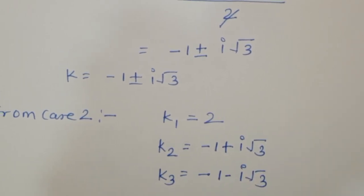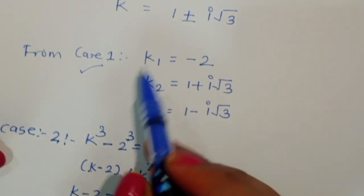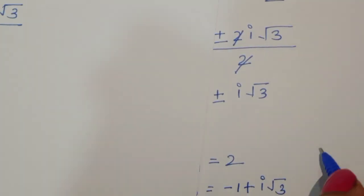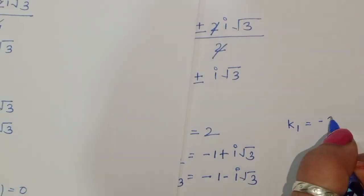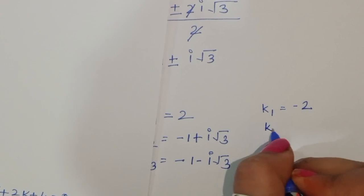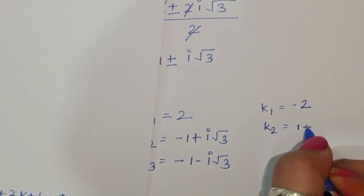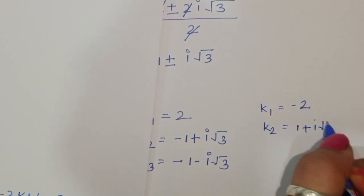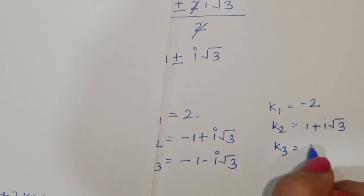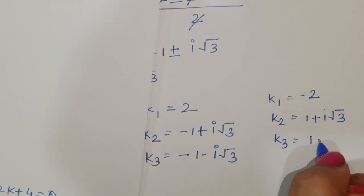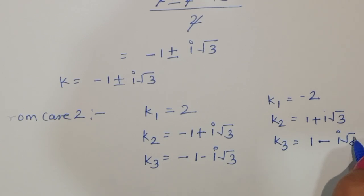In summary, from Case 1: k₁ = -2, k₂ = 1 + i√3, k₃ = 1 - i√3. And from Case 2: k₄ = 2, k₅ = -1 + i√3, k₆ = -1 - i√3. These are all six values of k.